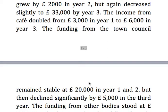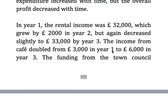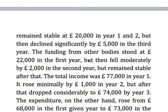The funding from the town council remained stable at £20,000 in years one and two but then declined significantly by £5,000 in the third year. Funding from other bodies stood at £22,000 in the first year but then fell moderately by £2,000 in the second year, remaining stable at £20,000 after that.